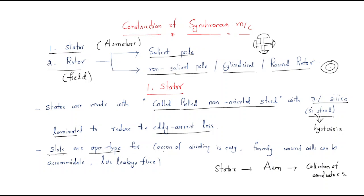The reason open type slots are used is: first, access of winding is easy; second, firmly wound coils can be accommodated; and third, leakage flux is less. These are the three reasons for using open type slots.